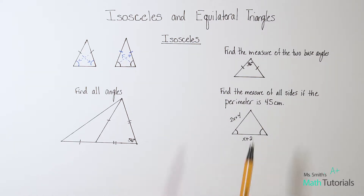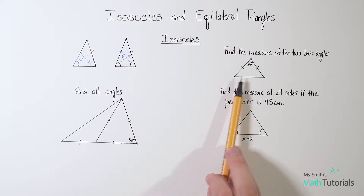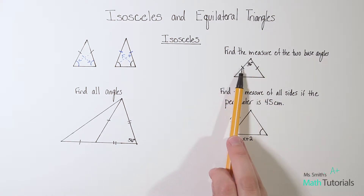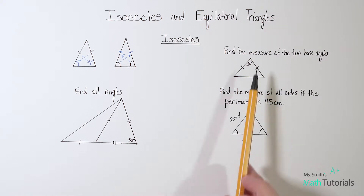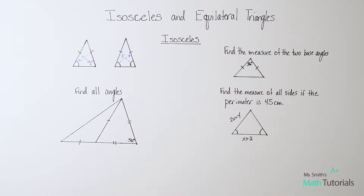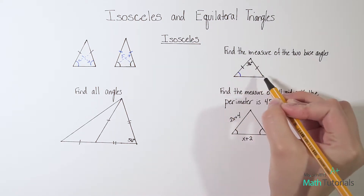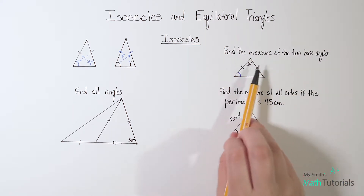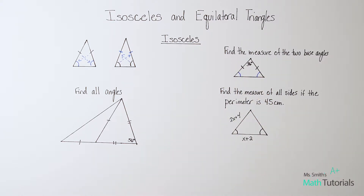So let's look at some problems related to isosceles triangles. This first one says find the measure of the two base angles. I've got this triangle — I see a tick mark here and here. They're telling me that the top angle is 36 degrees. That top angle is not one of the base angles; it's called the vertex angle of the triangle. So if this is 36 degrees and these two base angles are congruent, I need to think back to what I know about the angles of a triangle — the angles of any triangle add up to 180 degrees.